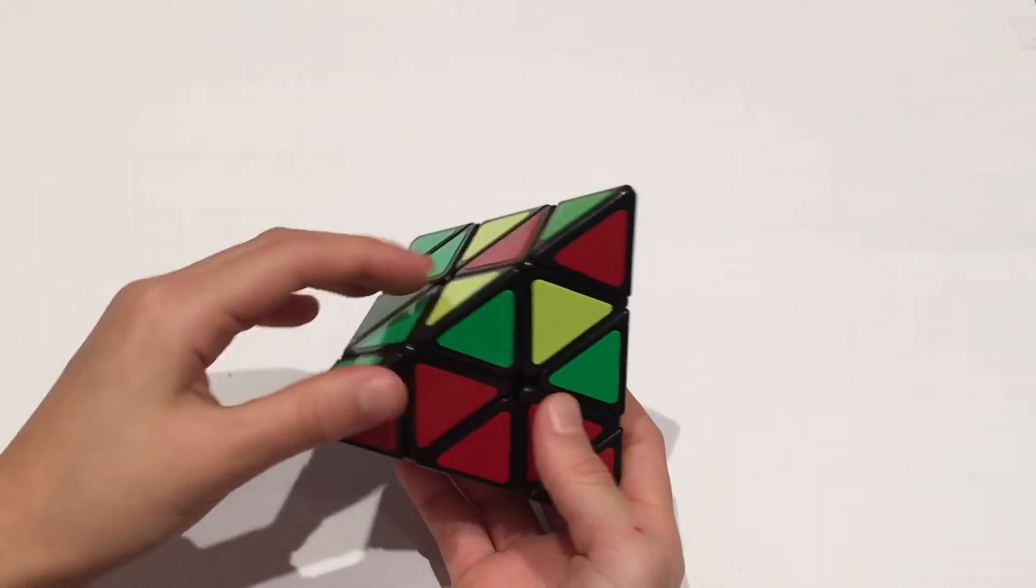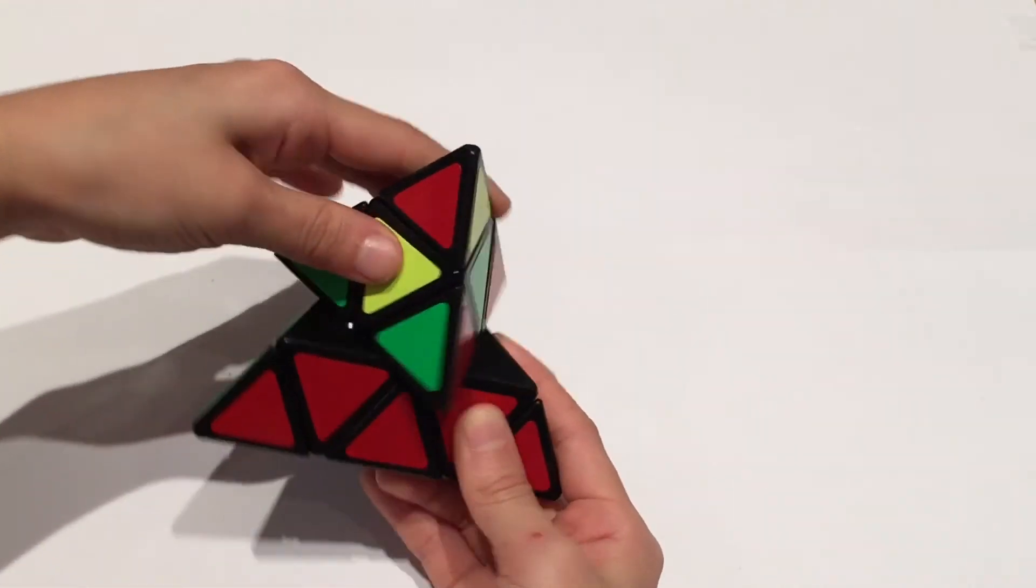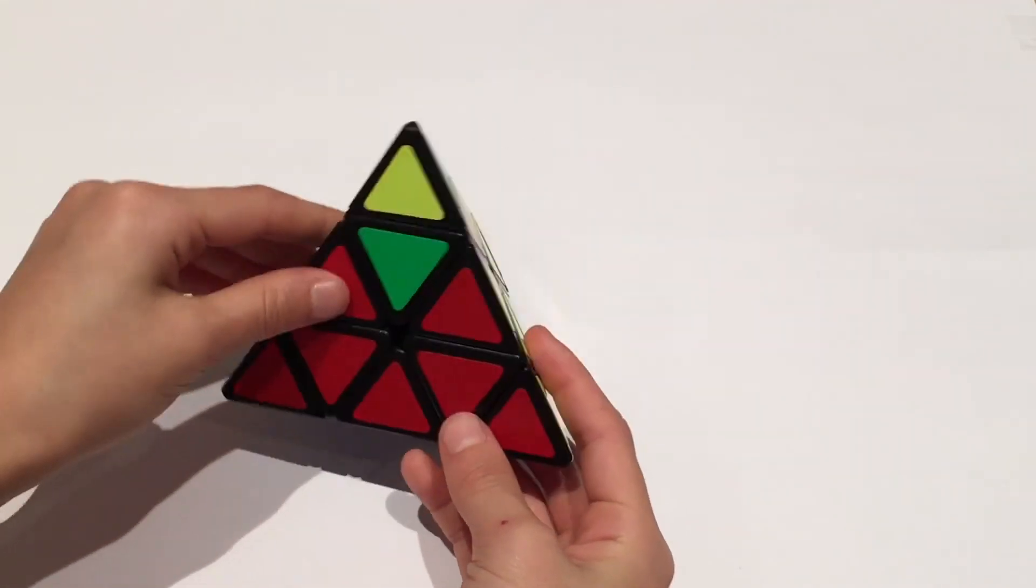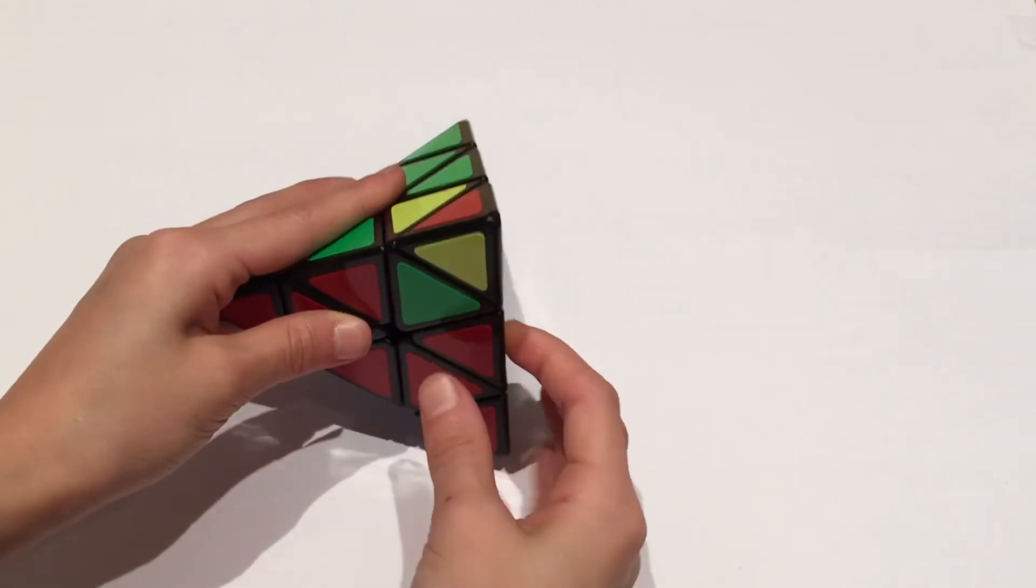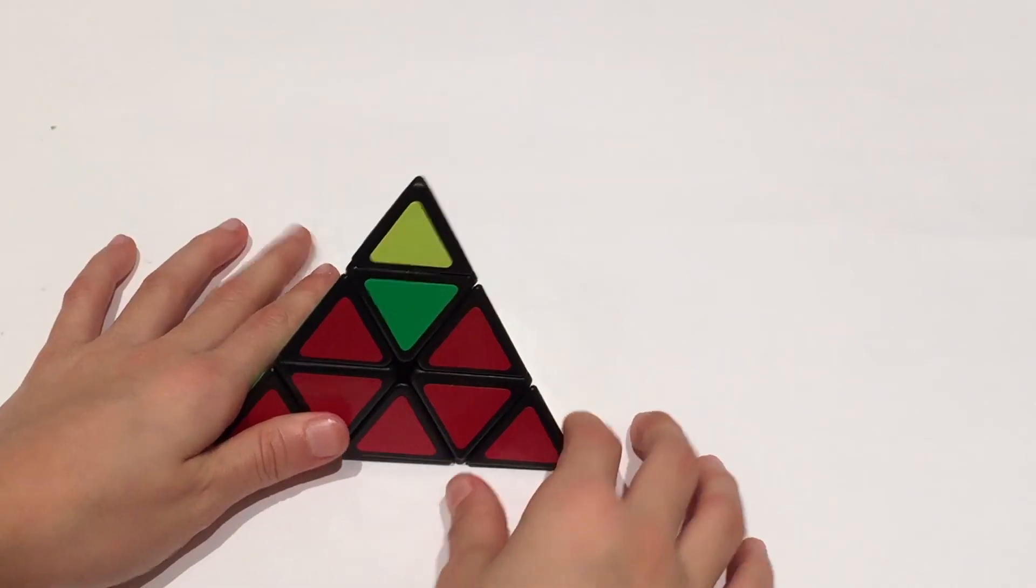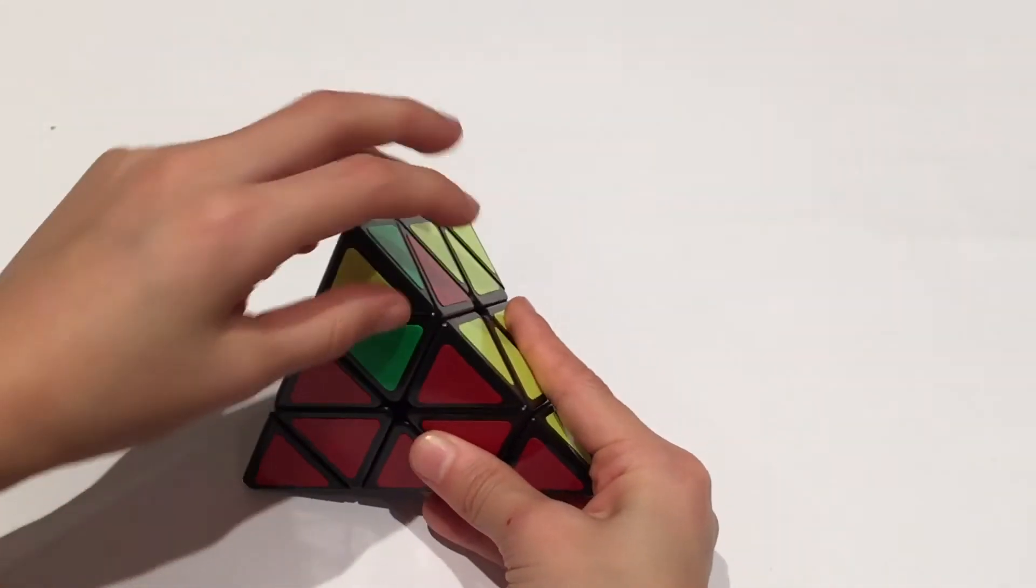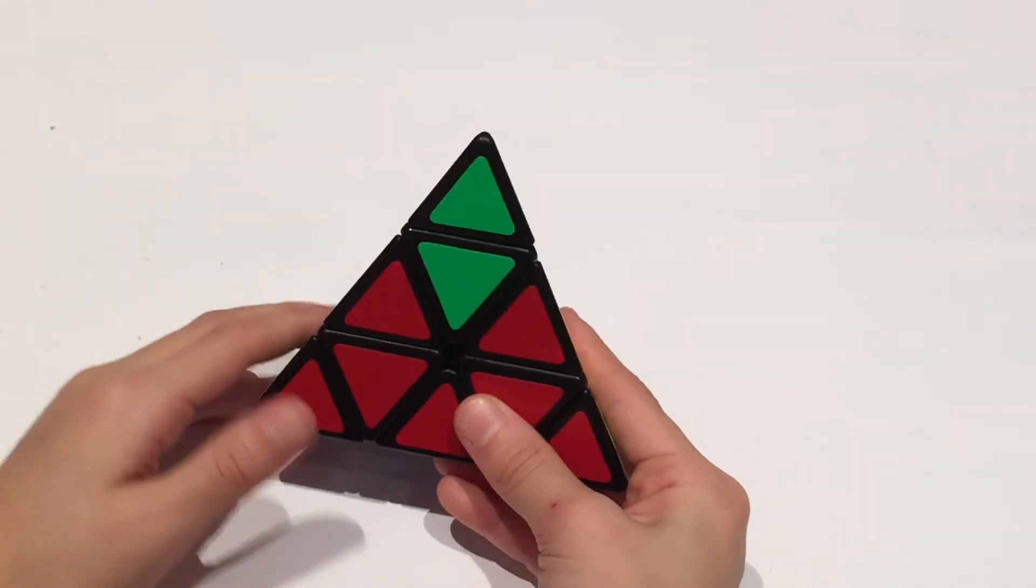So now you want to match the headlights with its correct area like so. And now we're going to work on moving the edges so that they go into the correct position. Now you want to match your tip to the center. So I'll just rotate it and now these all have pairs.